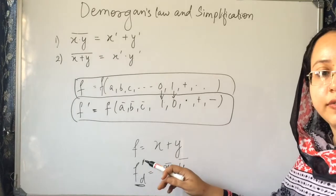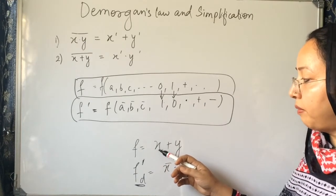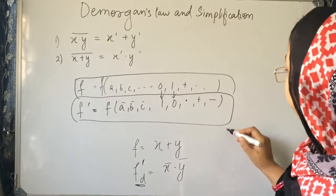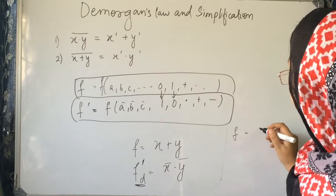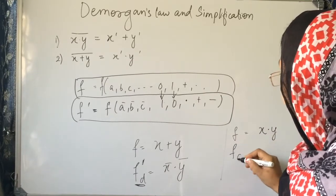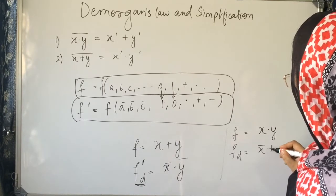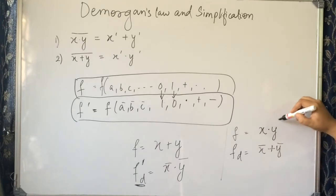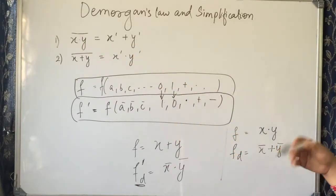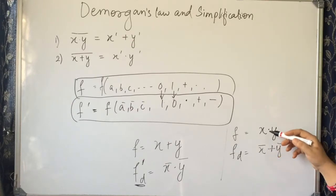If a function is given in Boolean variables and we have to find its dual function, you just have to complement the variables and convert plus to dot and dot will be converted to plus. If your function is given as x dot y, then its dual will be x bar plus y bar. We are complementing this, and x dot y complement is x complement plus y complement. So x has been converted to its complement, y has been converted to its complement, and dot has been converted to plus.